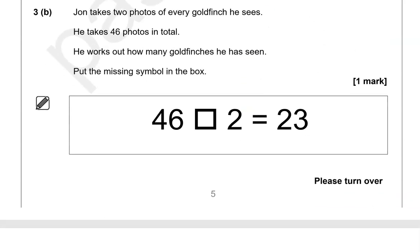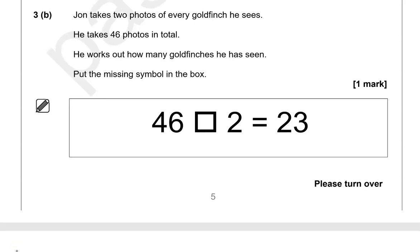John takes 2 photos of every goldfinch he sees. He takes 46 photos in total. He works out how many goldfinches he has seen. Put the missing symbol in the box. So it's 46 photos in total. If we divide that by 2, it should give us how many goldfinches he has seen. So the division symbol is what we need to put here.